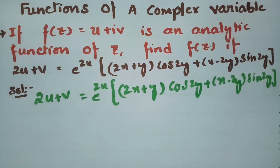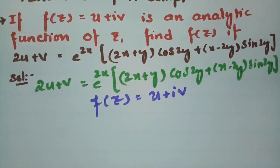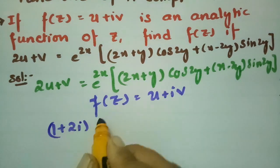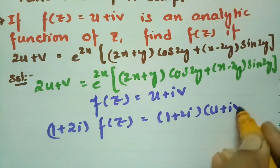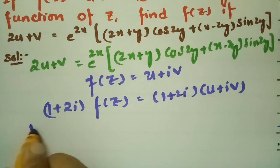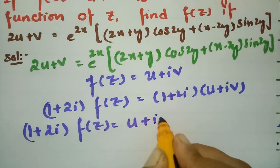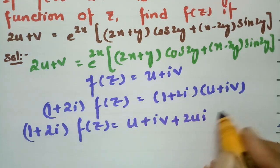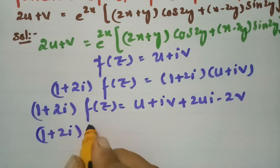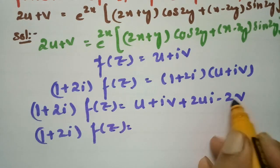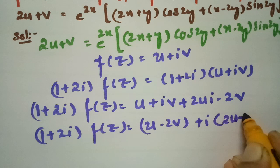According to the Milne-Thompson method, we have f(z) = u + iv. Now if I multiply with (1 + 2i), then (1 + 2i)·f(z) = (1 + 2i)(u + iv) = u + iv + 2iu + 2i²v. Taking real and imaginary parts separately, (1 + 2i)·f(z) = (u - 2v) + i(2u + v).